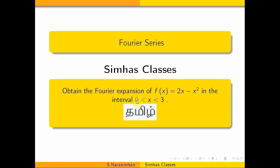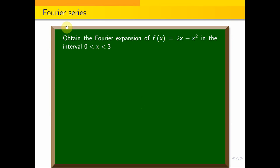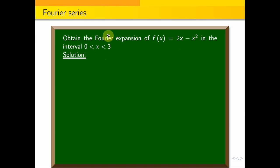Hi students. Welcome to Semma's classes. Fourier series — in this series, it is a question. Obtain the Fourier expansion of f of x, where f of x is equal to 2x minus x square in the interval 0 less than x less than 3. It is a problem. In the interval 0 to 3, we use the 0 to 2l formula to solve it.